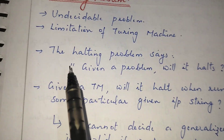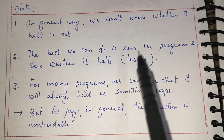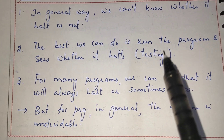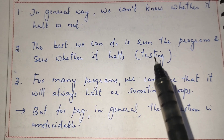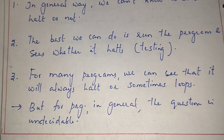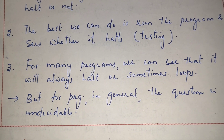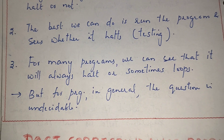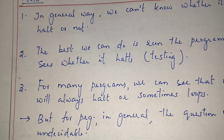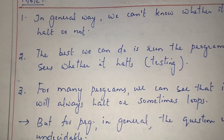In general, we don't know whether the Turing machine will halt for a particular input. The only method is trial and error — to test whether the machine halts for a given input. We cannot say this in a generalized manner, so the halting problem is an undecidable problem.